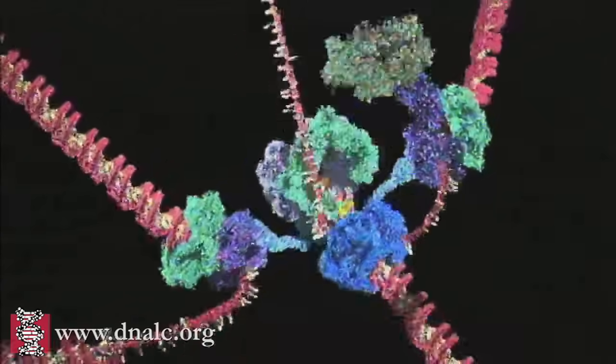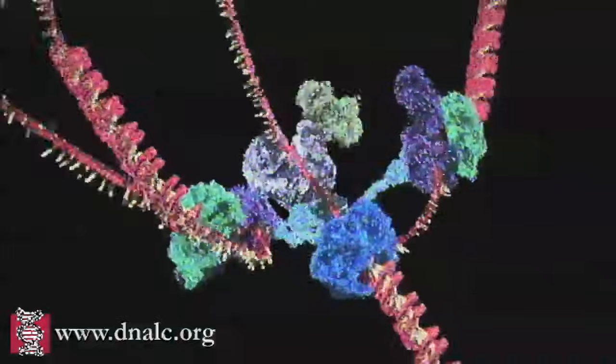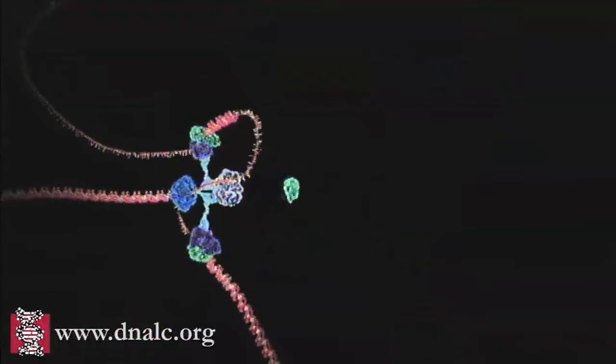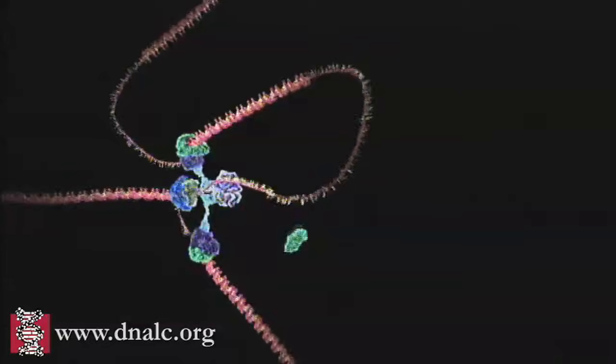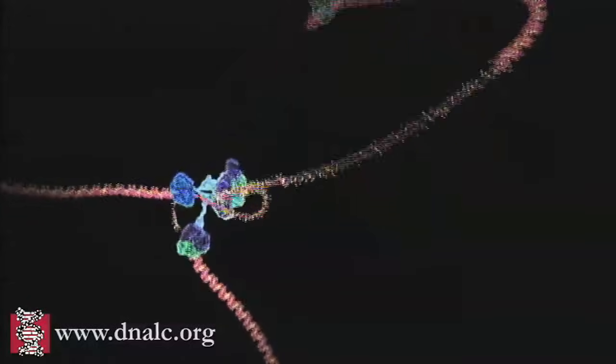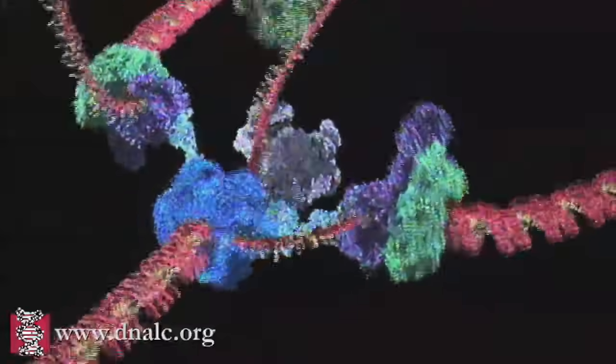During DNA replication, both strands of the double helix act as templates for the formation of new DNA molecules. Copying occurs at a localized region called the replication fork, which is a Y-shaped structure where new DNA strands are synthesized by a multi-enzyme complex.